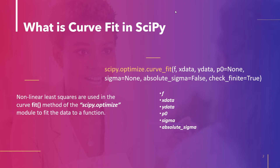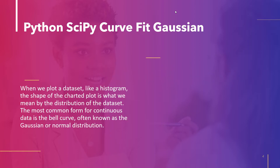We will use this method to fit the data in the upcoming topics. The next topic is Python scipy curve fit Gaussian. The form of a charted plot is what we refer to as the data set distribution when we plot a data set like a histogram. The bell curve, usually referred to as the Gaussian or normal distribution, is the most frequently seen shape for continuous data. Let's fit the data to the Gaussian distribution using the method curve_fit with an example.